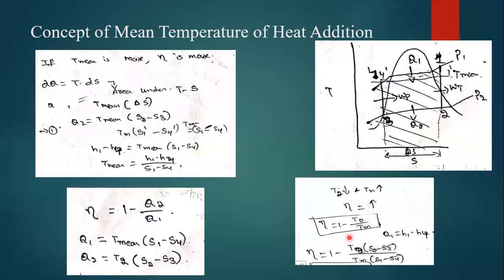See here, this equation we have - the efficiency is 1 minus T2 by T mean, right? So if we have this equation, which is going to be higher? If I am going to have higher T mean, if the mean temperature is going to be high, then what would it be? For suppose, 1 minus T2 by T mean.